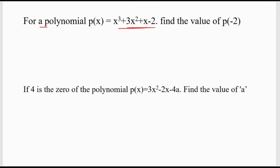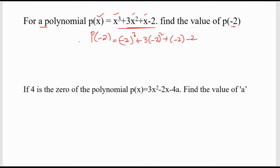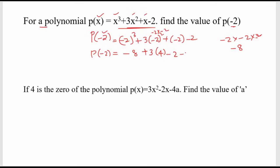For polynomial: P(x) equals x cube plus 3x square plus x minus 2. Find the value of P(minus 2). Since x is given as minus 2, replace x with minus 2 everywhere: minus 2 cube plus 3 into minus 2 square plus minus 2 minus 2. Minus 2 cube is minus 8. 3 into minus 2 square: minus 2 times minus 2 is plus 4, so 3 into 4 is plus 12. So: minus 8 plus 12 minus 2 minus 2 equals minus 4. Minus 8 minus 4 is minus 12. Minus 12 plus 12 equals 0. So P(minus 2) equals 0.